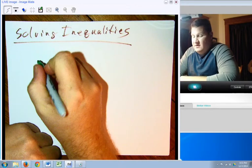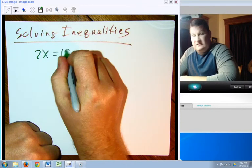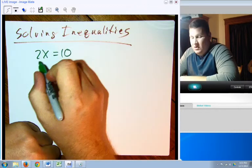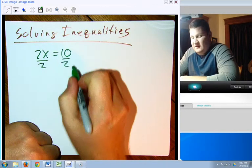Because if I have 2x is equal to 10, to solve this, all I do is divide both sides by 2, x equals 5.